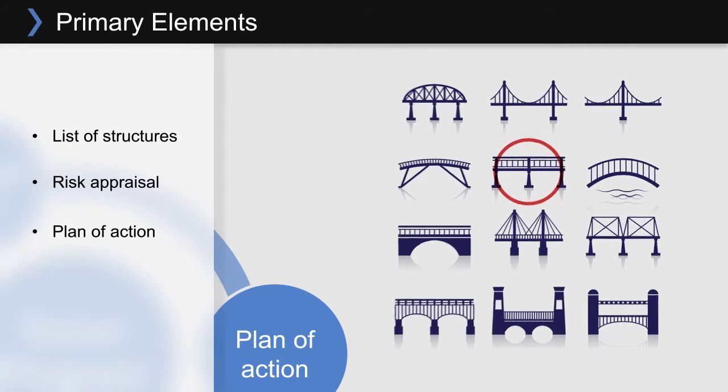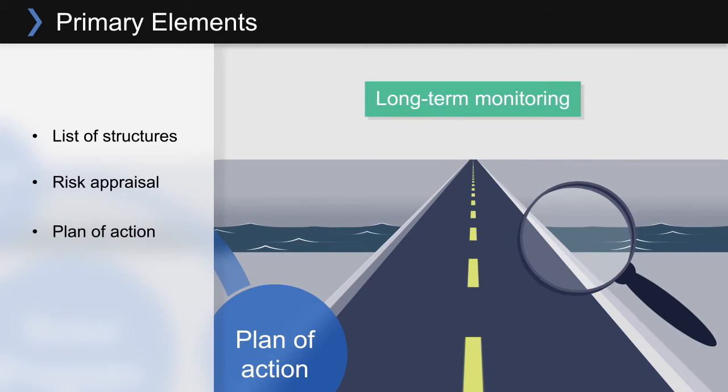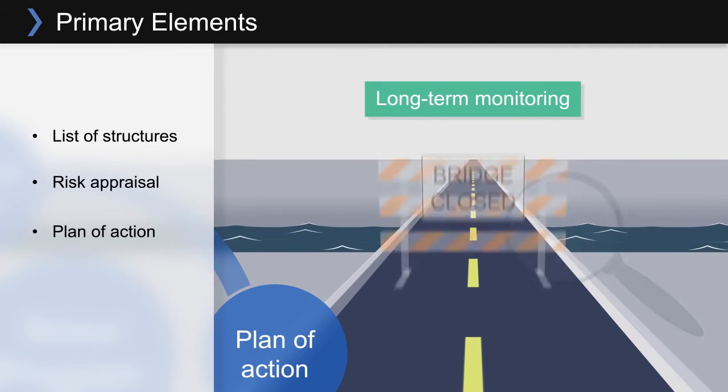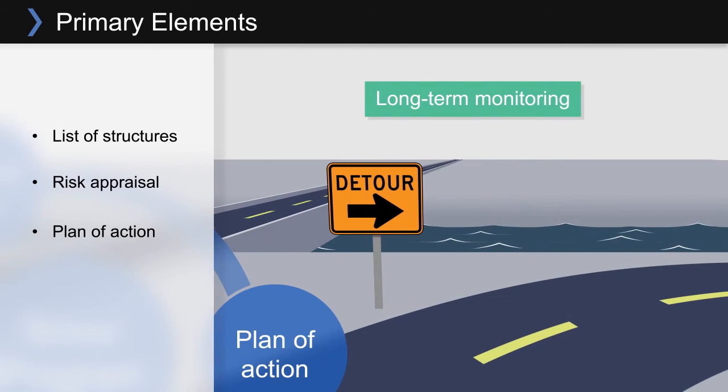For some structures, the plan of action will specify long-term monitoring. For example, when will the structure be monitored? What is the indication of failure? Under what conditions will it be closed and reopened? And what is the planned detour route?